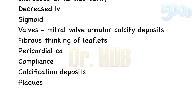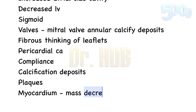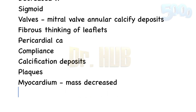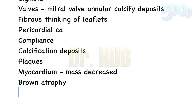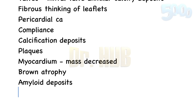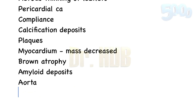Now moving on to the myocardium: there is a decrease in mass. There can be increased subepicardial fat. There is presence of brown atrophy, as well as lipofuscin deposition, basophilic degeneration, and amyloid deposits.